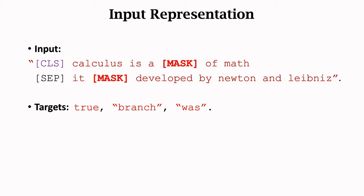The first task is to make a binary classification. The model seeks to tell whether the second sentence is the next sentence. In this example, the two sentences are actually neighboring in the original context. So we set the first target to true. The first masked word is branch. We set the second target to branch. The second masked word is was. We set the third target to was.